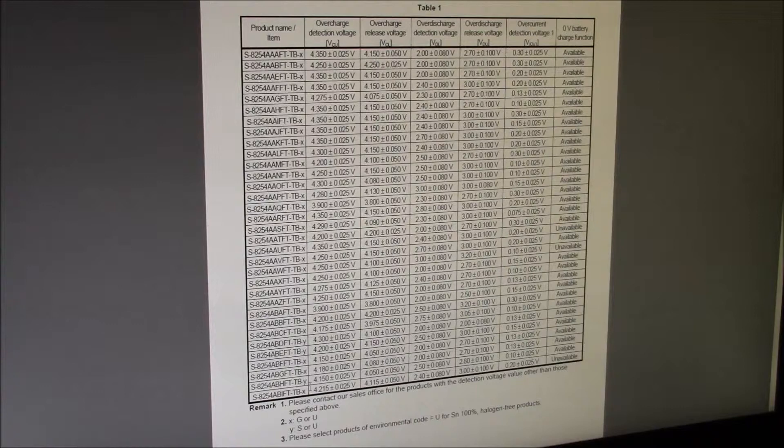You can see there's all these 54AA, 54AB and they all have different overcharge voltages. You know 4.15, 4.25, 4.075, just lots of different numbers there.